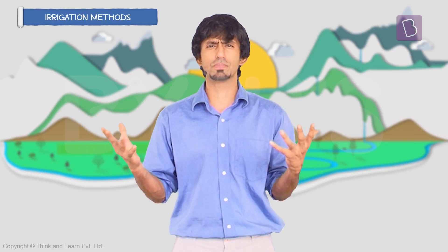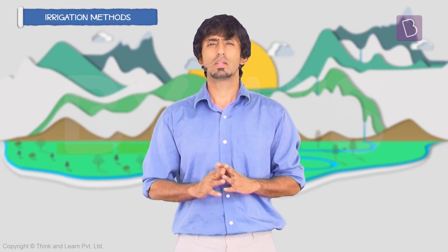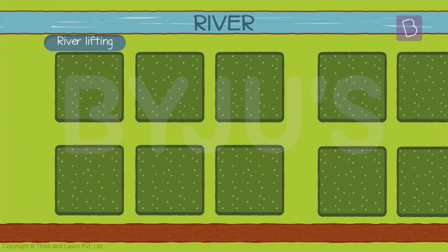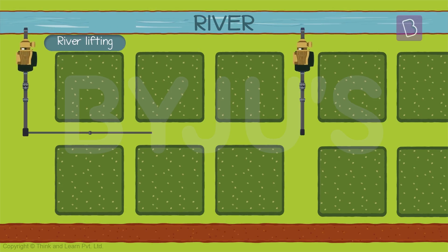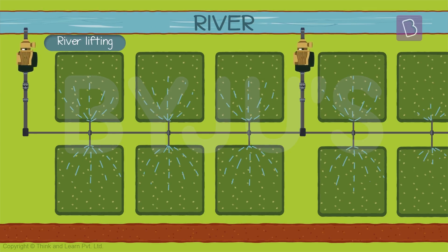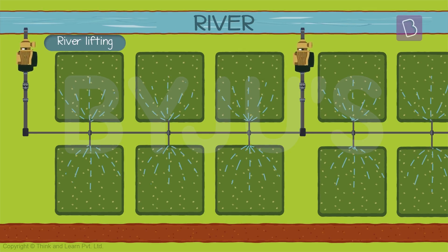If the canal system is not very efficient and is not able to reach people, then very close to the rivers, water is taken directly from these rivers — it is directly lifted out. That's why it's called a river lift system. You take water directly from there — that's the third method.